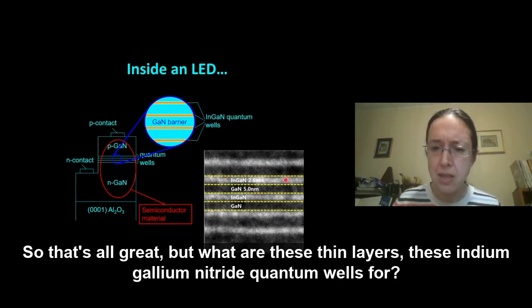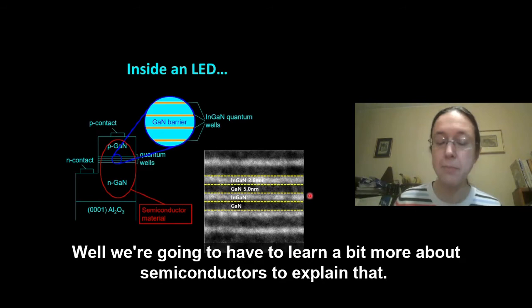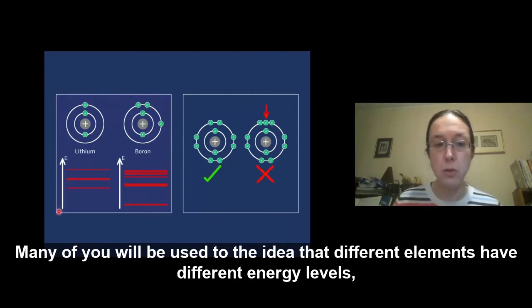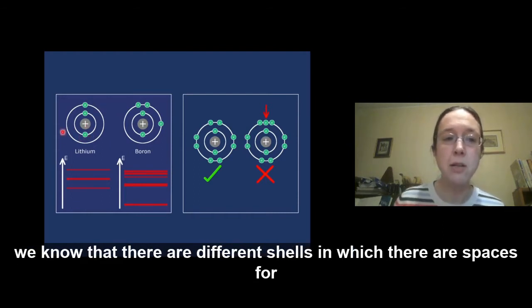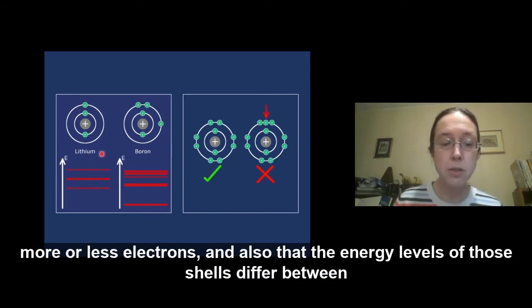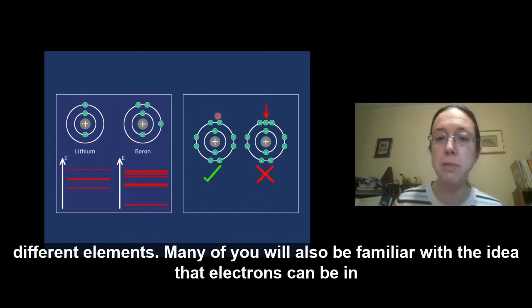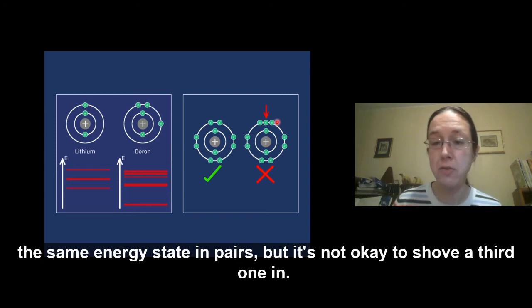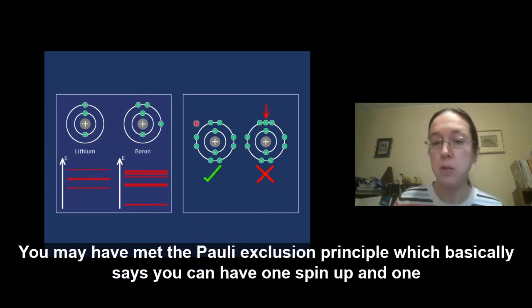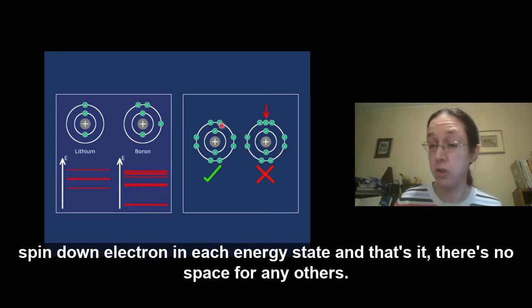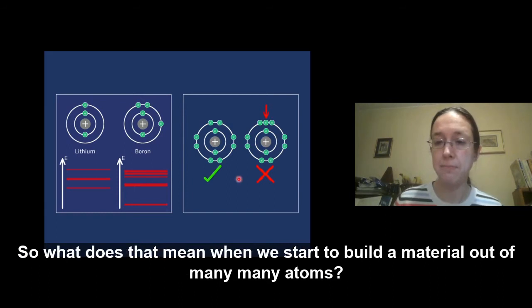So that's all great. But what are these thin layers, these indium gallium nitride quantum wells for? Well, we're going to have to learn a bit more about semiconductors to explain that. Now, many of you will be used to the idea that different elements have different energy levels. We know that there are different shells in which there are spaces for more or less electrons. And also that the energy levels of those shells differ between different elements. Many of you will also be familiar with the idea that electrons can be in the same energy state in pairs, but it's not OK to shove a third one in. You may have met the Pauli exclusion principle, which basically says you can have one spin up and one spin down electron in each energy state. And that's it. There's no space for any others.